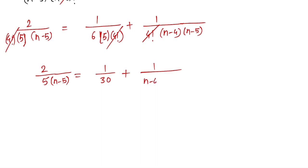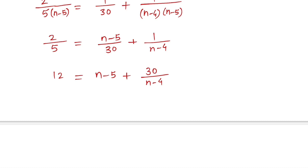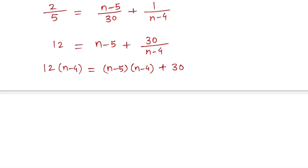Now multiply throughout by (n minus 5): 2 over 5 equals (n minus 5) over 30 plus 1 over (n minus 4). Then multiply throughout by 30: 12 equals (n minus 5) plus 30 over (n minus 4). Multiplying throughout by (n minus 4): 12 times (n minus 4) equals (n minus 5) times (n minus 4) plus 30. Expanding: 12n minus 48 equals n squared minus 9n plus 20 plus 30.